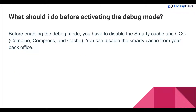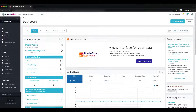Before activating the debug mode, we have to make sure we clear the cache. To clear the cache, you have to disable the Smarty cache and CCC — that is the Combined Compression Cache. You can disable the Smarty cache from your back office.